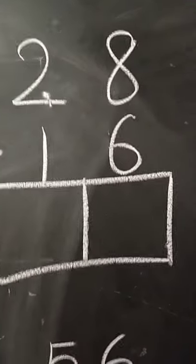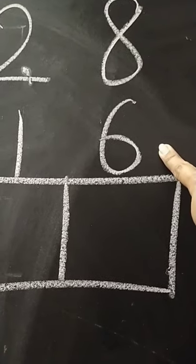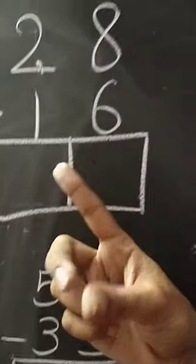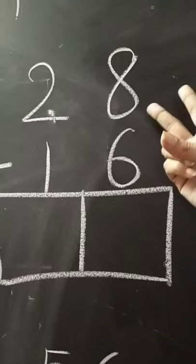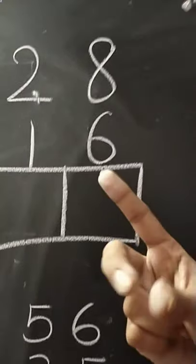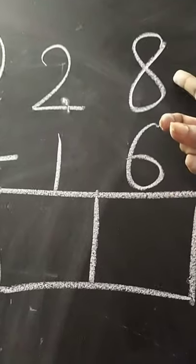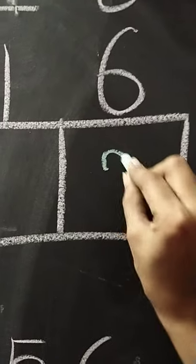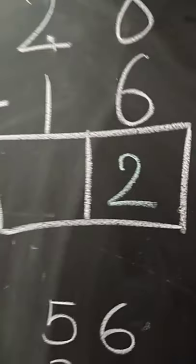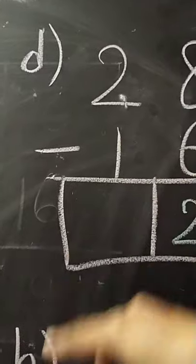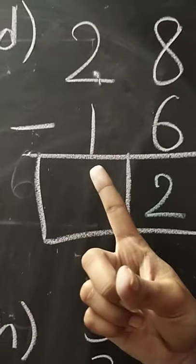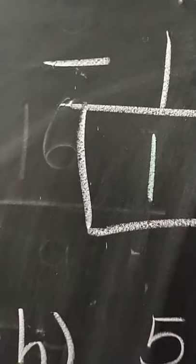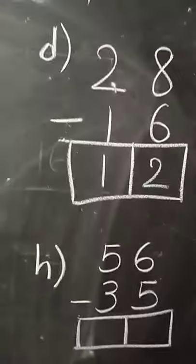Next, we have D. 8 minus 6. What comes after 6? 7 and 8. So, the difference if we subtract 6 from 8, the difference will be 2. Then, 2 minus 1. What comes after 1? 2. So, 2 minus 1 will be 1. The answer is 12.